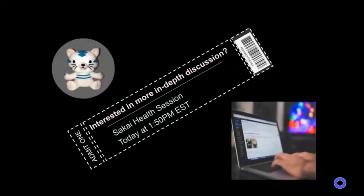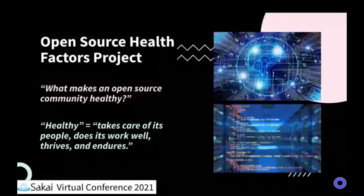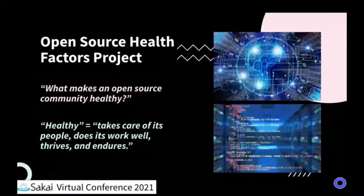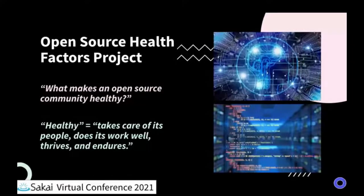We have a session at 1:50. We're really going to dip our toe into the data today. If what you see is interesting, join us at 1:50 right after this session and we'll invite you to help us think more about the results. What is the open source health factors project? It's a project designed to answer: what makes an open source community healthy? We define healthy as an organization that takes care of its people, does its work well, thrives and endures. We spent a couple years on this, did research, engaged with the Sakai community, and came up with nine factors that influence health. We designed a survey to measure for those factors, tested it, and implemented it for the first time last month with Sakai.